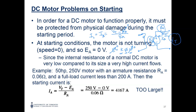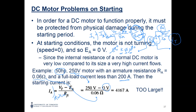With E_A equal to zero at startup, the starting current becomes V_T / R_A — which is extremely large. For example, with a 50-horsepower motor at 250 V with R_A = 0.06 Ω and rated current of 200 A, the starting current is 250 / 0.06 = over 4,000 amps. Compared to the rated 200 amps, this is extremely large.